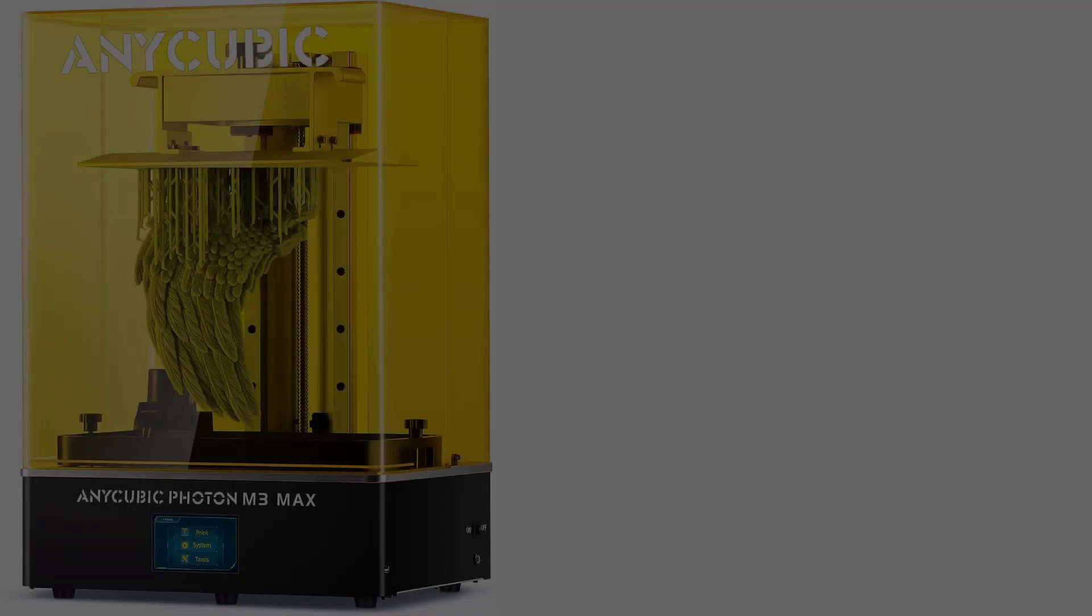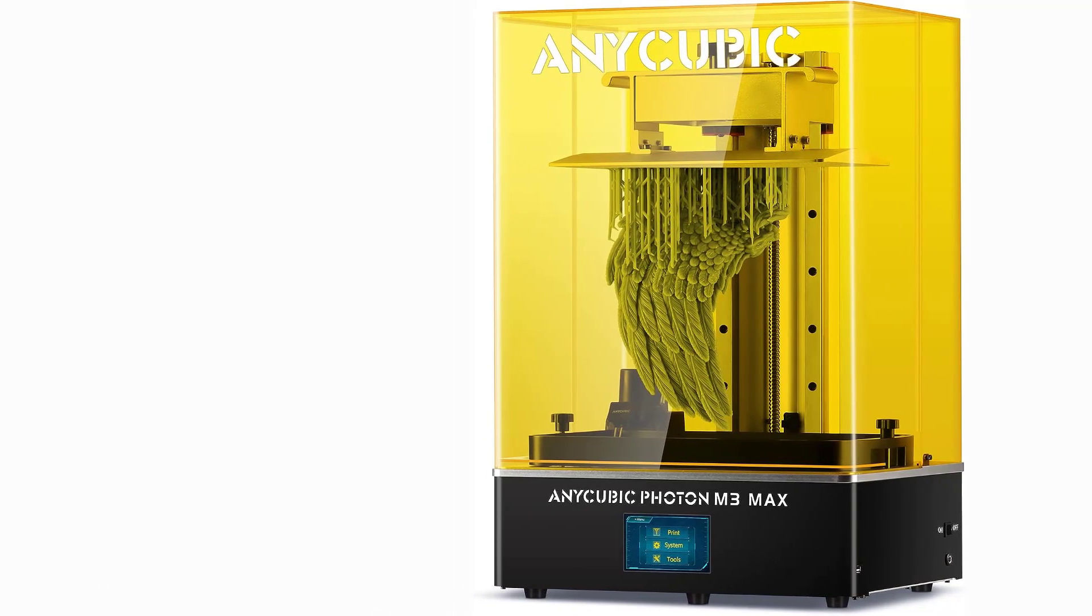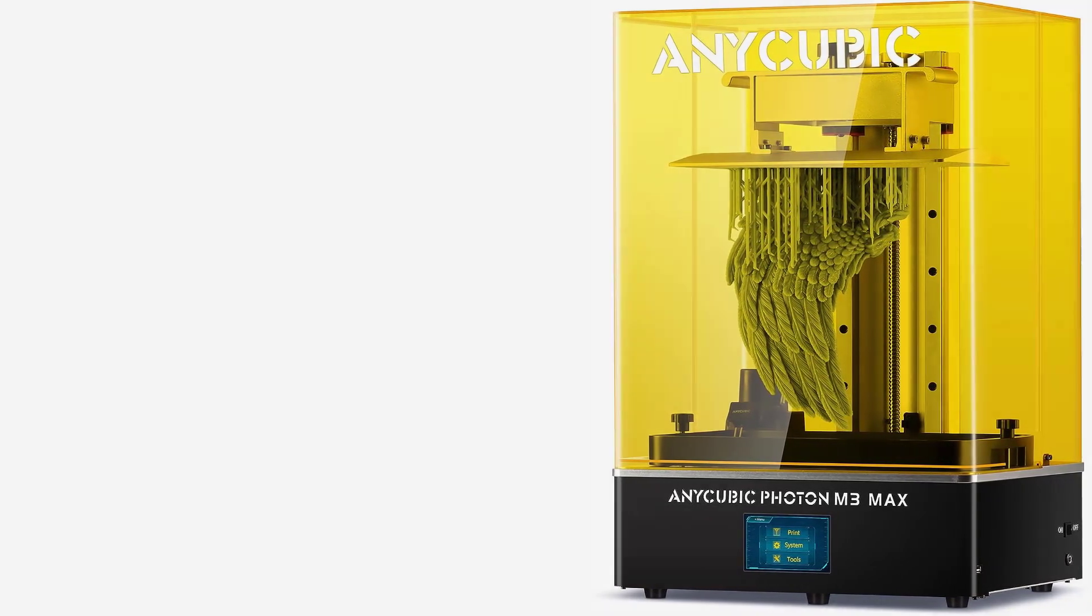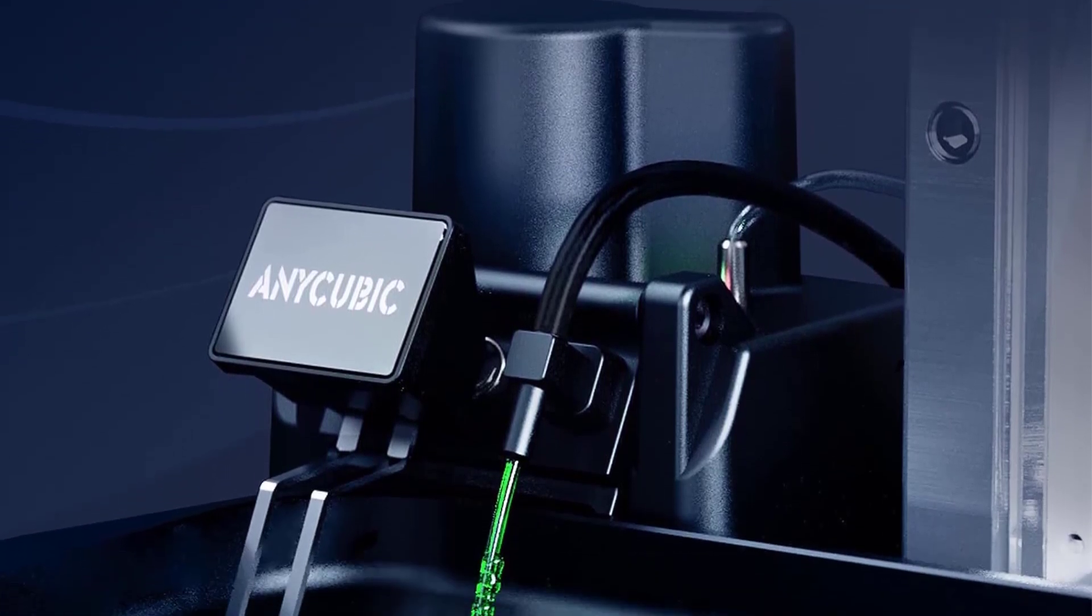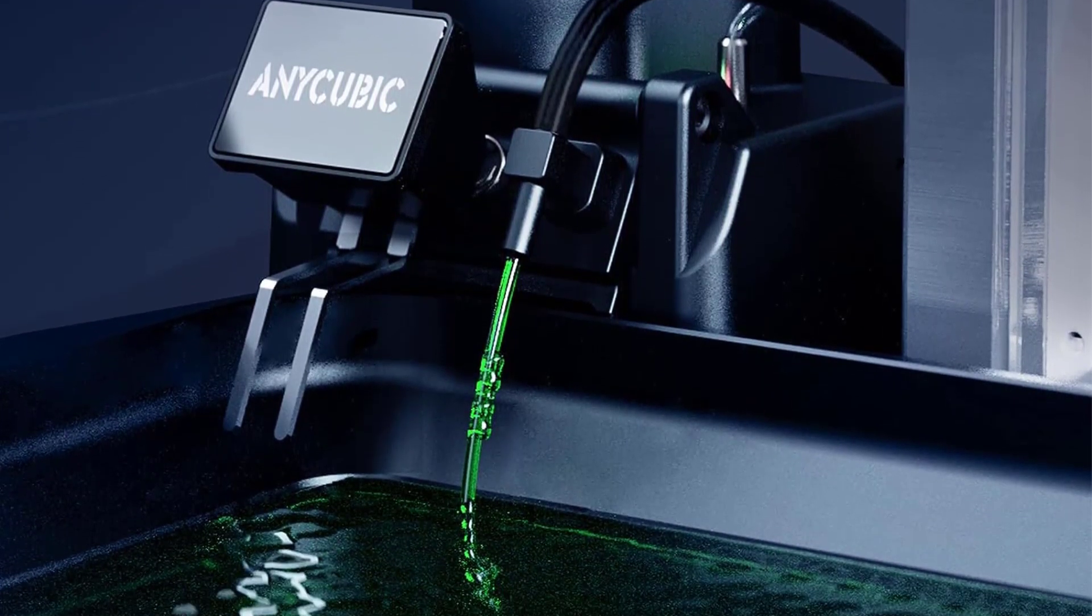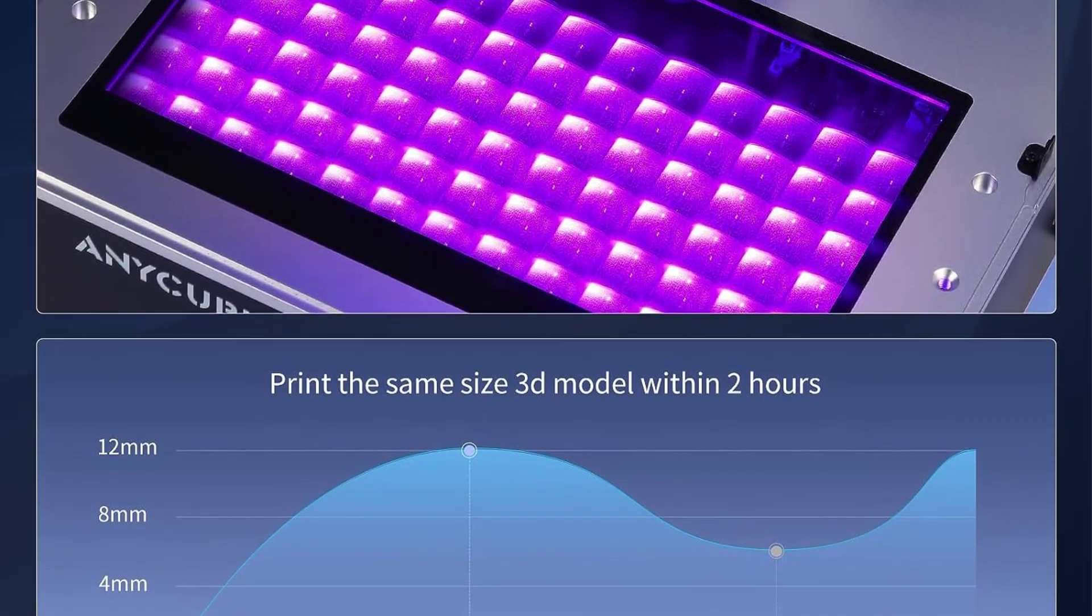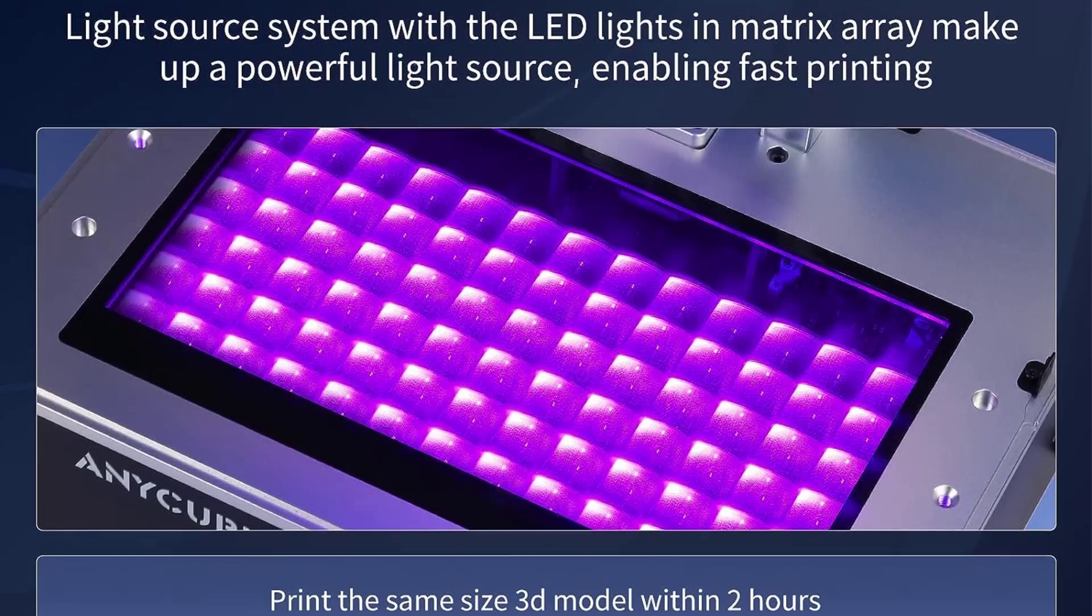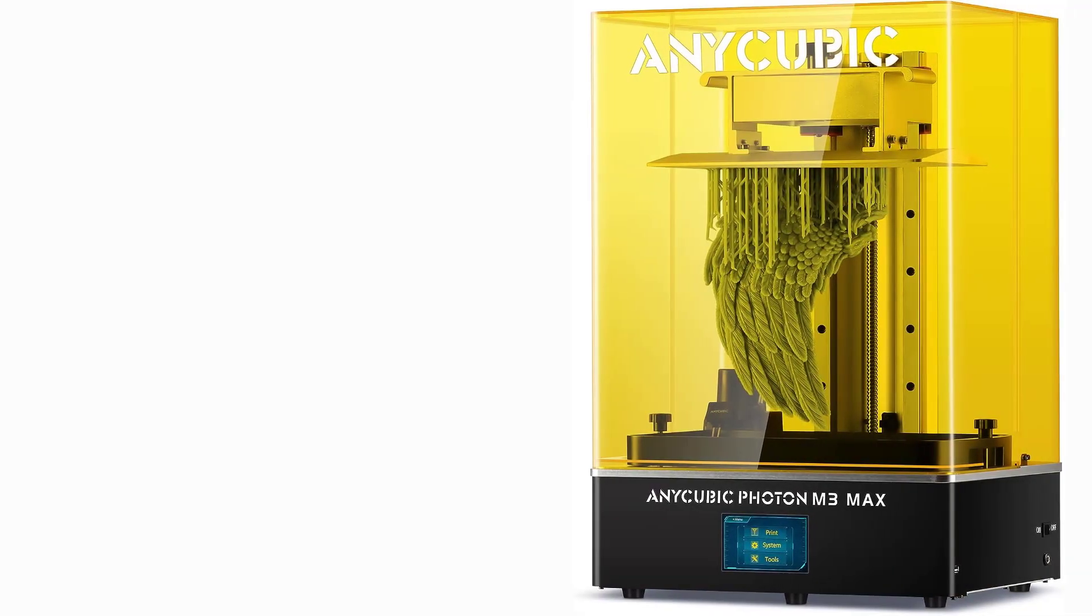If you've tried filament 3D printers and get frustrated with clogged nozzles and stuck filaments, then Anycubic Photon Mono X 3D Printer, the best resin 3D printer, might be just the trick. With printing that's three times faster than traditional 3D printers, a single layer only takes one to two seconds for exposure, even when you factor in the large-capacity print volume for an impressively high resolution of 3840x2400 pixels.